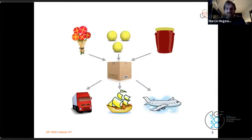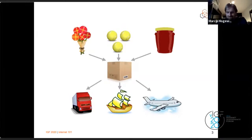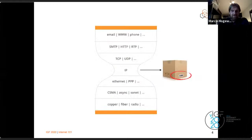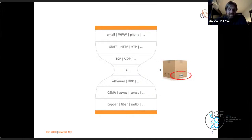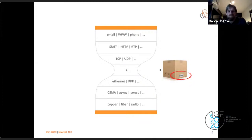You can use any variety of mechanisms to get a package to its destination — trucks, planes, ships. The internet uses the hourglass model, with a narrow middle representing the internet protocol. That narrow middle is essentially those cardboard boxes. And if you start sending cardboard boxes around, you need a shipping label.